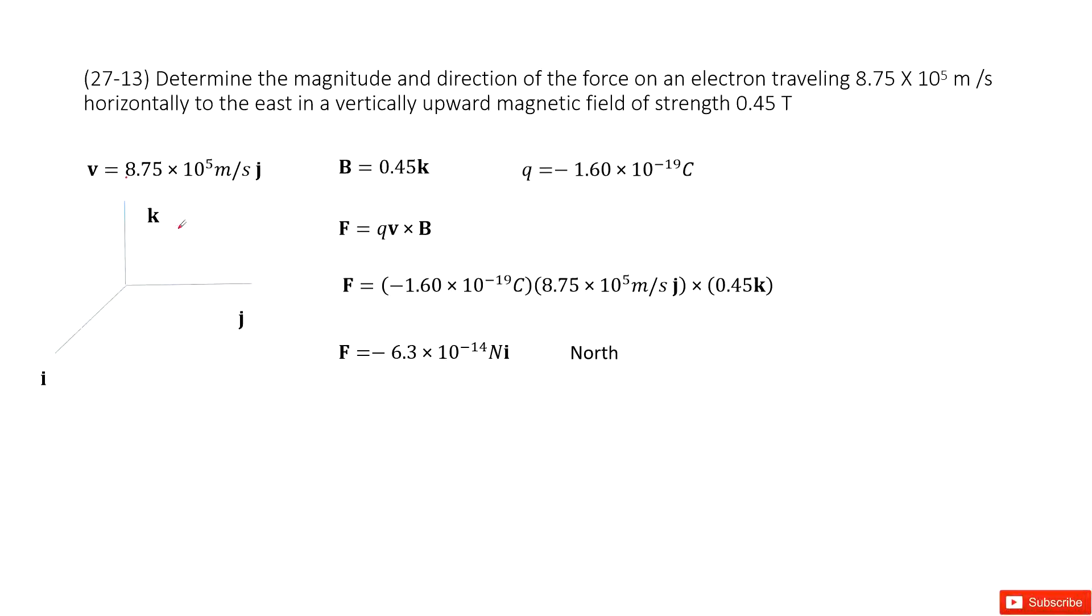So we can draw a space. I draw a k, look at this way. The velocity for the electron is to the east. So that is at J direction, so we write it there. And the magnetic field is upward, so at the k direction.